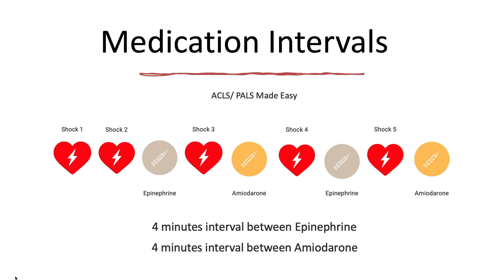The pattern followed in VF or pulseless VT arrest is: high quality CPR, defibrillate once, defibrillate a second time, give epinephrine, defibrillate a third time, give amiodarone, defibrillate a fourth time, give epinephrine, defibrillate a fifth time, give amiodarone, defibrillate a sixth time, then epinephrine again. A helpful memory aid: after an even number of shocks (2, 4, 6), the patient receives epi; after an odd number of shocks (3 and 5), the patient receives amiodarone — assuming the rhythm remains VF or pulseless VT throughout.